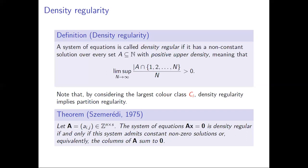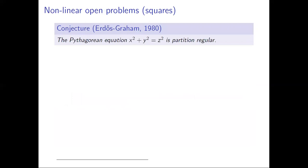What we want to look at moving forward are generalizations of Rado's theorem and Szemerédi's theorem to non-linear systems of equations. We're going to motivate this further by stating a number of famous open problems. Probably the most famous is the following conjecture of Erdős and Graham, which concerns the partition regularity of the Pythagorean equation: whenever we finitely color the positive integers there exists x, y, z all the same color such that x² + y² = z².